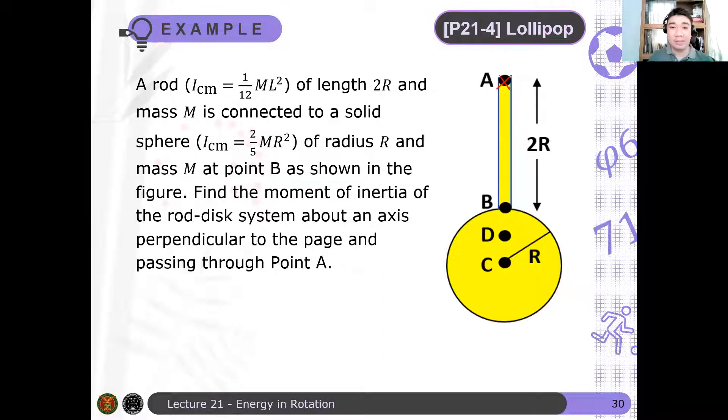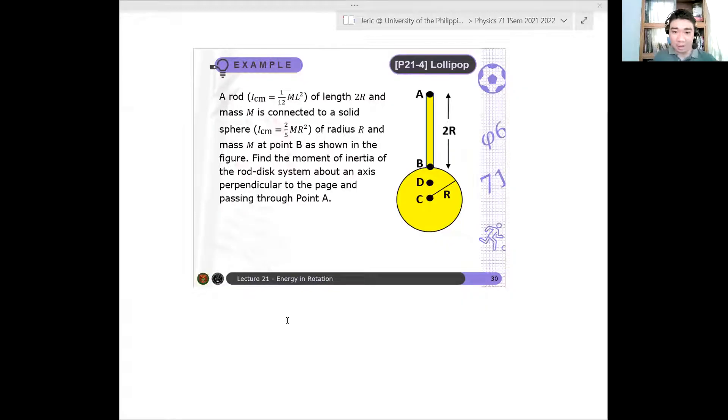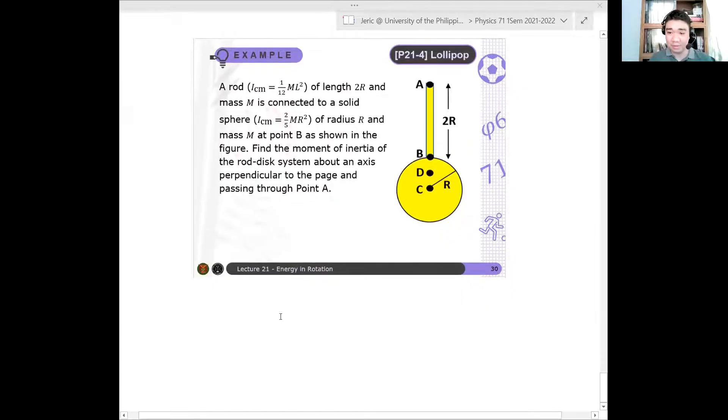Okay, so let me just solve this problem for you. So let me redraw the system. Earlier, the example was for discrete particles. What if you have a continuous rigid body? How do you use your parallel axis theorem? That's what I'll show you in this exercise.